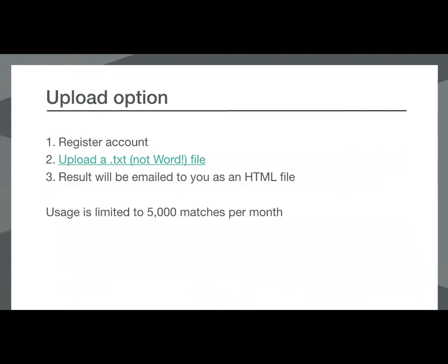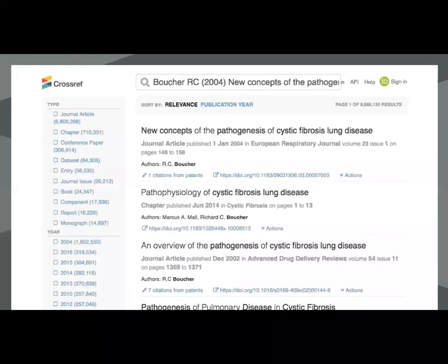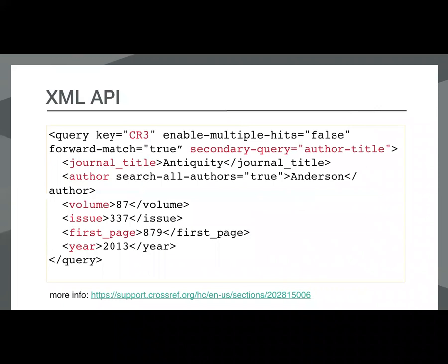We also have a metadata search interface for more free-text searching. It's handy for a number of things, but if you use it to identify DOI matches for citations, it doesn't return only the one true match like our Simple Text Query form — you have to make sure the match you find is the perfect match and not just the closest match. You would just cut and paste a citation into the form and it would return a list of results. We also have an XML-based API that allows you to submit citations and get a DOI match back if available. This API supports XML-formatted querying, which gives you significant control over the DOI matching process.